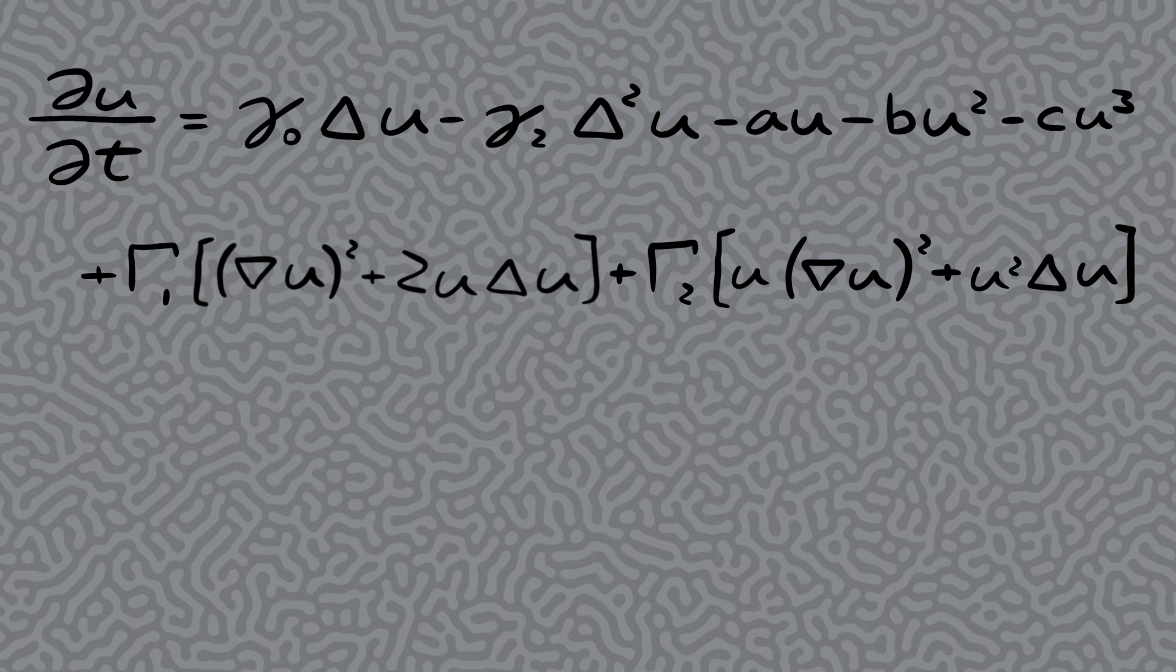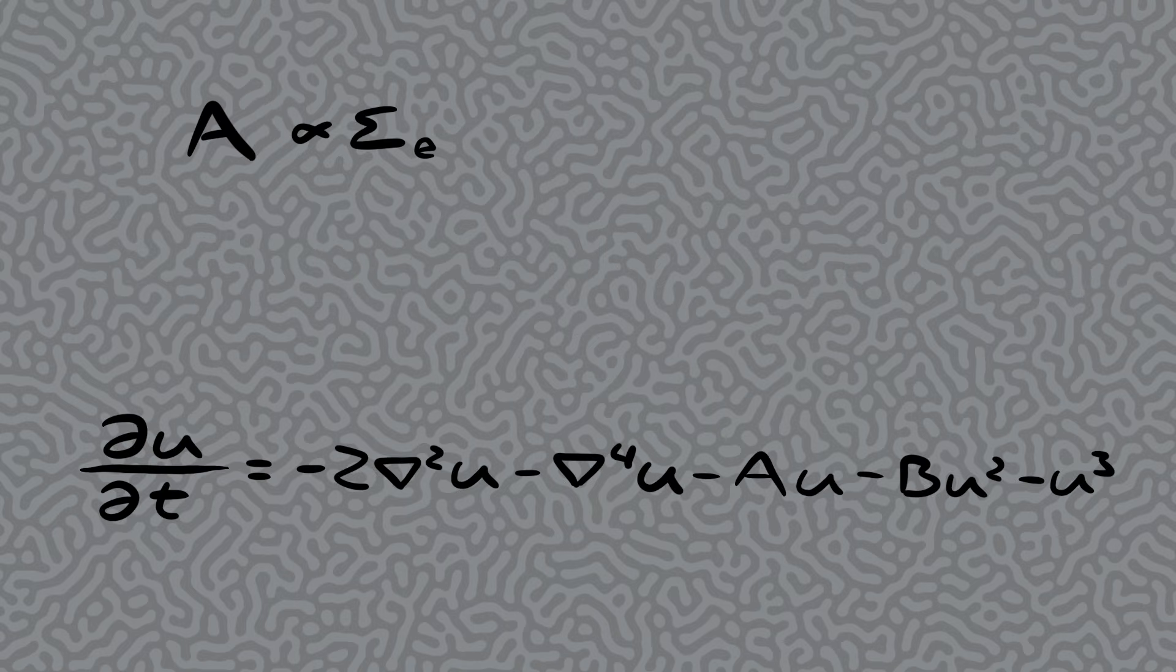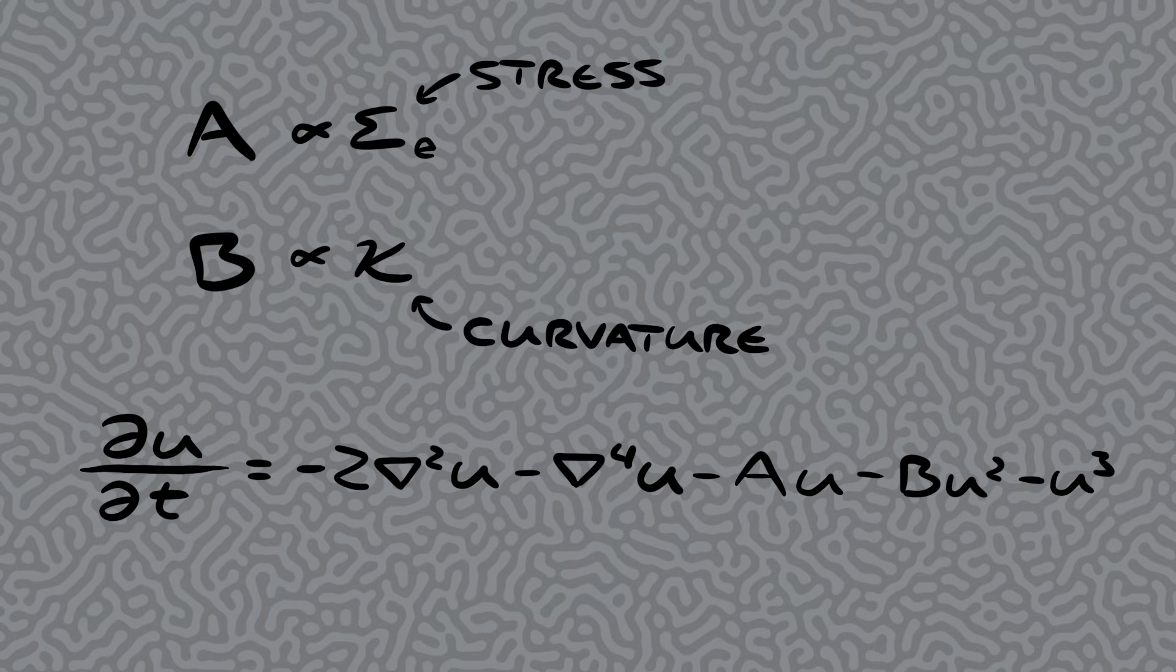The first step has got to be the wrinkles. Last time I showed you an equation for wrinkles on a curved surface, and if we make a few more assumptions, we can simplify this in terms of only two parameters. These roughly correspond to some combination of the stress and the curvature of a wrinkling object.